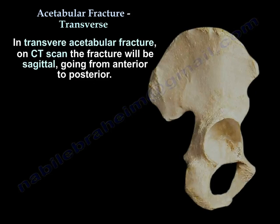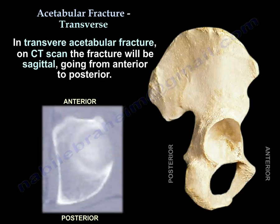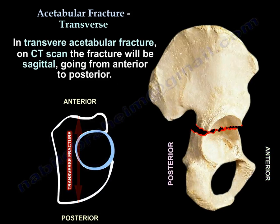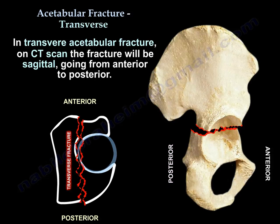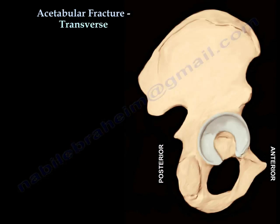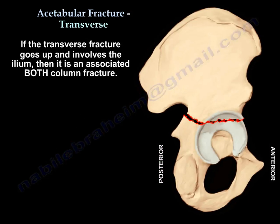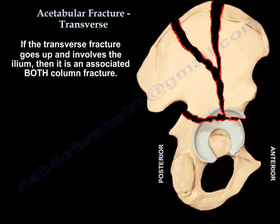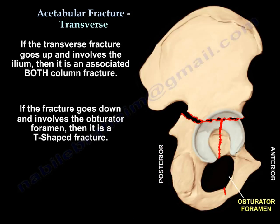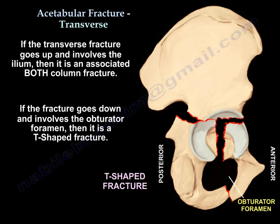In a transverse fracture, the fracture will appear sagittal on CT scan, going from anterior to posterior. If the transverse fracture extends upward and involves the ilium, it becomes an associated both column fracture. If the fracture extends downward and involves the obturator foramen, then it is a T-fracture.